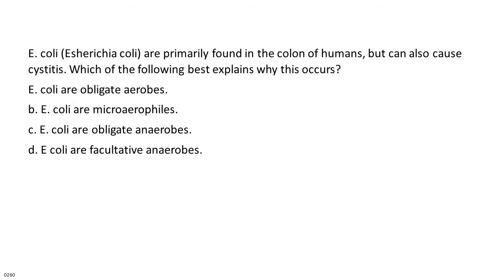E. coli, Escherichia coli, are primarily found in the colon of humans but can also cause cystitis. Which of the following best explains why this occurs? A. E. coli are obligate aerobes. B. E. coli are microaerophiles. C. E. coli are obligate anaerobes. D. E. coli are facultative anaerobes.